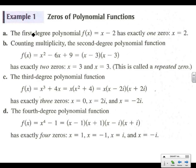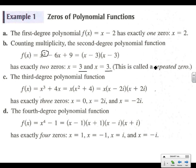If we take a look at our first example — the first degree polynomial x minus 2 has one zero, and we know it's 2; we can set this equal to zero. The second one, we could factor x² into (x − 3)(x − 3). Again, it's going to have exactly 2 zeros, and we know it's 3 and 3, or 3 with a multiplicity of 2.